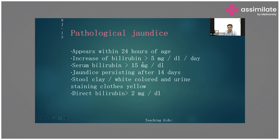Characteristics of pathological jaundice: appearance within 24 hours, bilirubin rise more than 5 mg/dL per day, serum bilirubin mostly more than 15 mg/dL, requiring therapy or blood transfusion, persisting beyond 15 days, and clay-colored or white stools indicating a direct bilirubin component — common in biliary atresia. It is critical to identify biliary atresia early, before 8 weeks of age, so that Kasai surgery can be offered. Surgery performed early can delay hepatic failure and preserve liver function, buying time for liver transplantation.